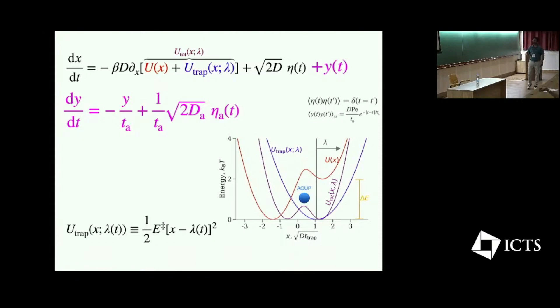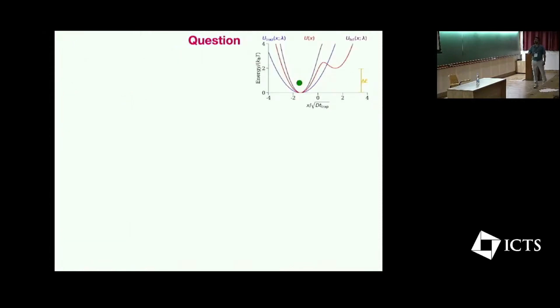So in the next slide I will explain what is the purpose of this trap. Again, we have an active particle in this red color non-linear potential and there is a trap, and the trap actually drags the particle over this non-linear potential. The question that I am asking is how to drive this particle from left to right in an optimal way so that the external work can be minimized or dissipation can be minimized.